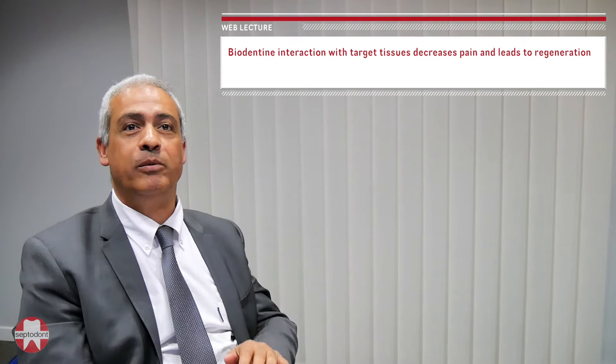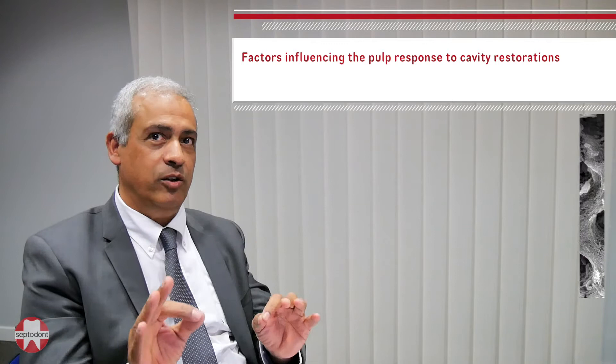Among the numerous applications of Biodentine, it can be applied directly onto the pulp or indirectly — which is called indirect pulp capping. In both situations, the major factor for the success of this treatment is to eliminate bacteria. If you eliminate bacteria, you are successful.